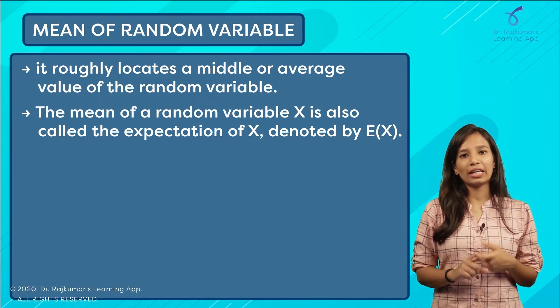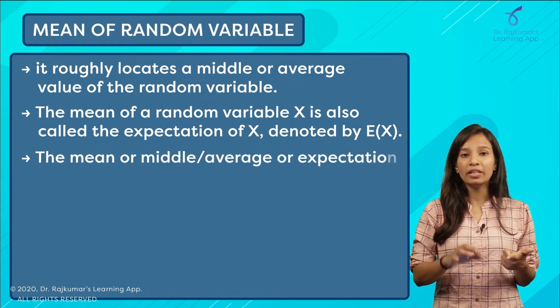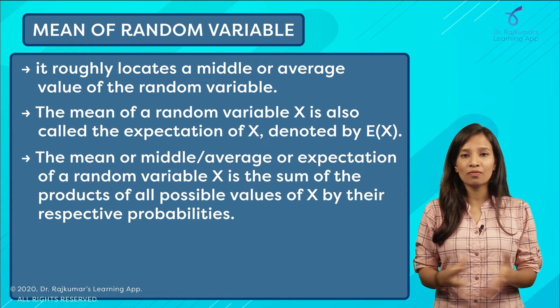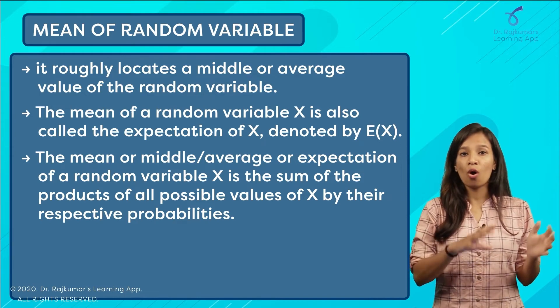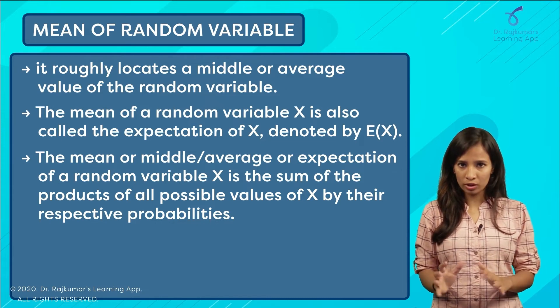In your question, they can ask you either find the mean of your random variable, or the middle or average value, or they can also ask you to find the expectation value of this random variable. All these mean the same thing. You will have to do the summation of the product of your xi with your probabilities.